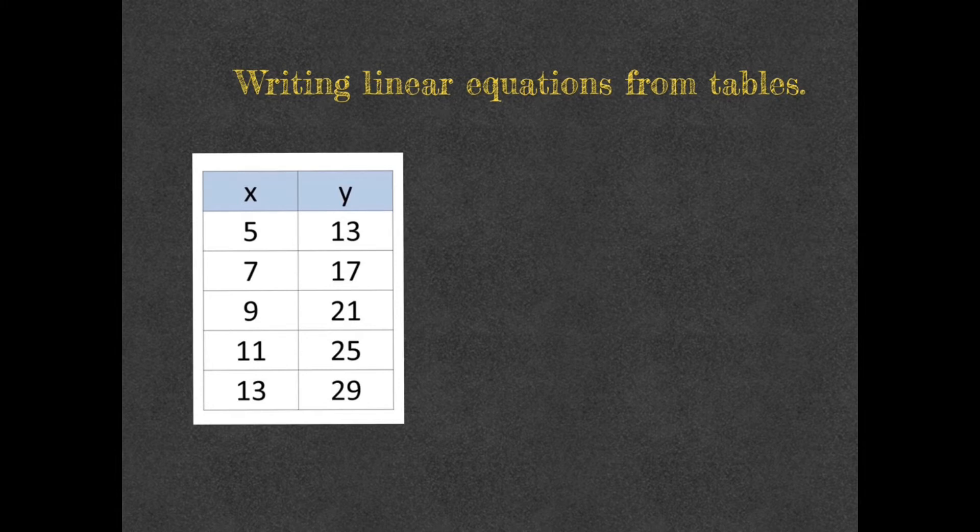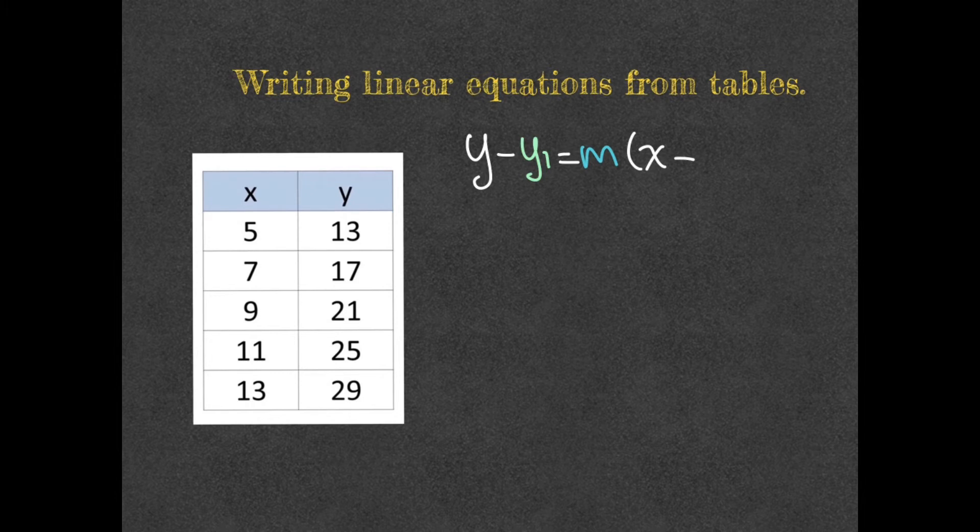In this table, we are going to start, obviously, looking in the x to see if we find a 0 value. The answer is no. So what does that tell me? I cannot use y equals mx plus b. Instead, we're going to have to use point slope, which is y minus y1 equals m times x minus x1.